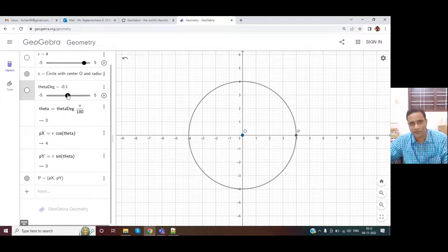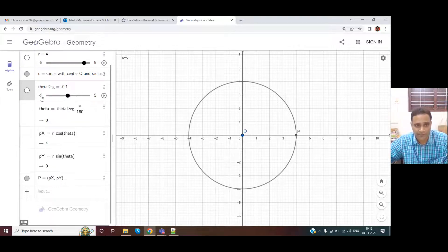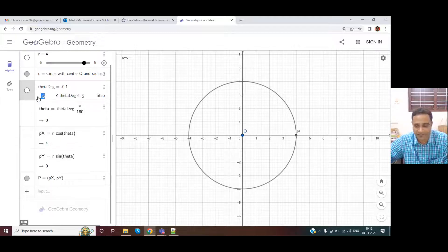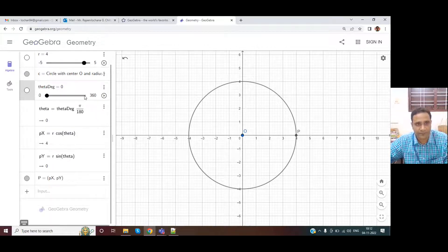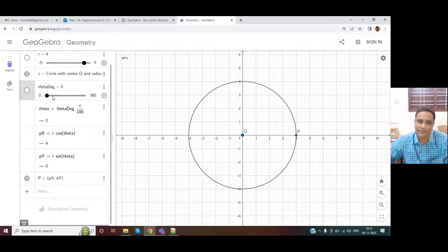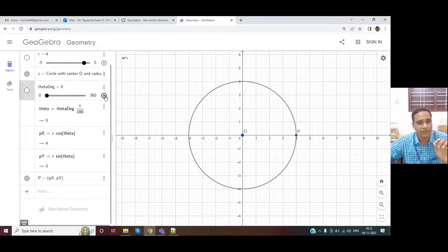So obviously the range is very small. If we click on the slider left part, I can define the value. Similarly, on the slider right, I'll define the value like this 0 to 360. Now there's a play button next to it. If you click on it.